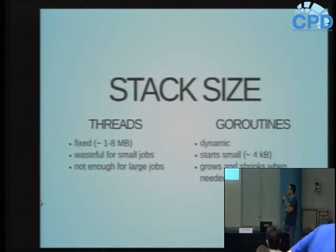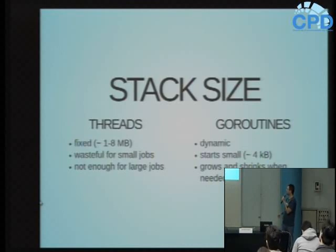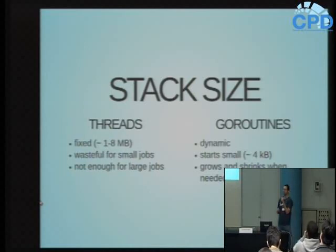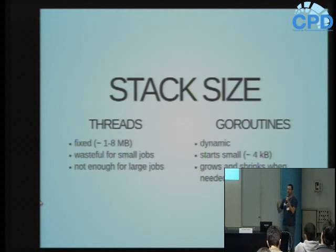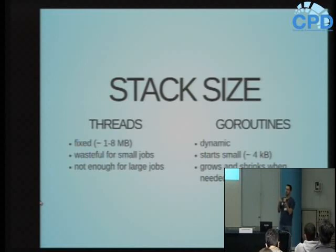Uma diferença entre threads e GoRoutines é o tamanho do stack. Quando crio uma thread, ela tem uma stack fixa - dependendo do sistema operacional, em torno de 1 a 8 MB. GoRoutine tem um stack dinâmico, que começa pequeno e vai crescendo conforme preciso, ou diminuindo se eu liberar a memória. Para uma tarefa pequena, criar uma thread com stack de 1 MB é desperdício. Para uma tarefa pesada, pode não ser suficiente. A vantagem da GoRoutine é que o stack começa em torno de 4K e cresce ou diminui dinamicamente.